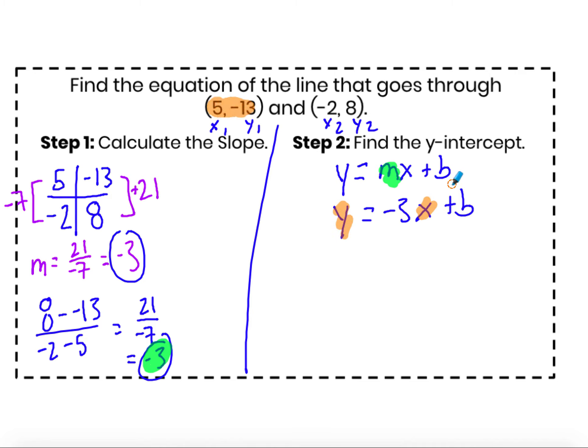Now I need to plug in one ordered pair for x and y. I'm going to choose to plug in 5, negative 13 just because it's first, but I could also plug in negative 2 for x and 8 for y. Being really careful to plug in negative 13 for y and not for x, I say negative 13 equals negative 3 times 5 plus b. Let's go ahead and multiply. Negative 13 equals negative 15 plus b. One step equation, I add 15 to both sides and I find that the start value is 2.